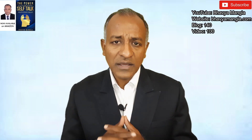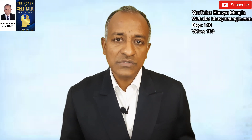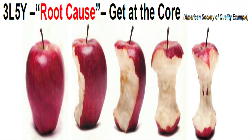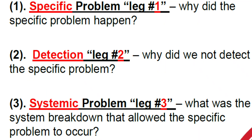There are many different techniques for root cause analysis. One popular technique is three-layered five-why analysis. The three layers address: why the problem occurred, why it flowed out, and what systemic failure resulted in this. The five-why part involves asking why, why, why, why, why — drilling down to the true root cause.